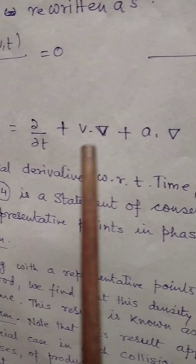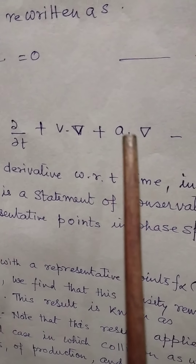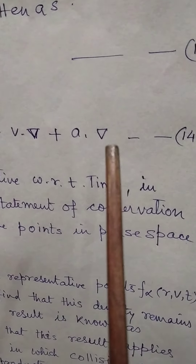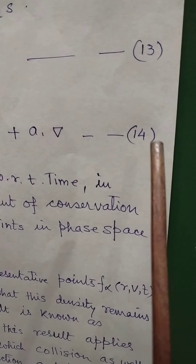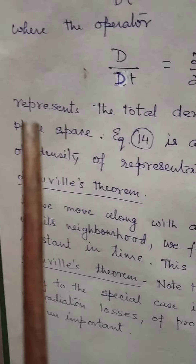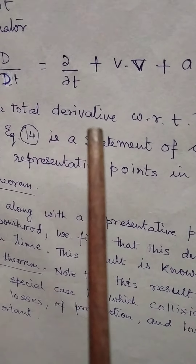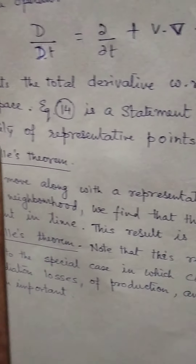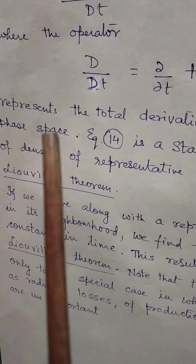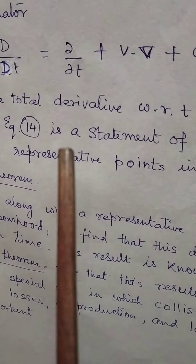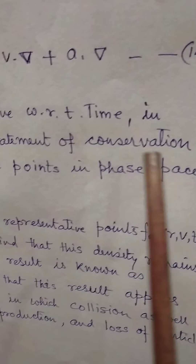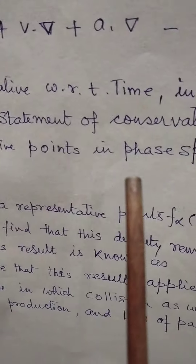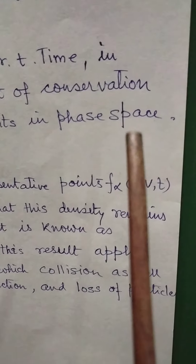The operator ∂/∂t + v·∇ + a·∇_v represents the total derivative with respect to time in phase space — equation number 14. This equation is a statement of conservation of density of representative points in phase space.